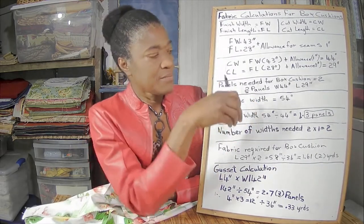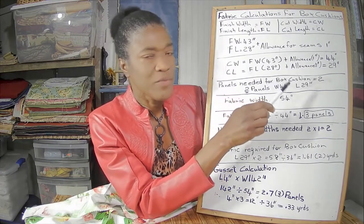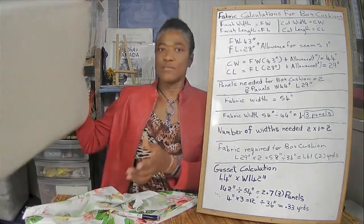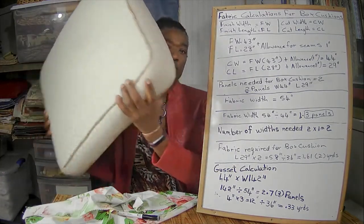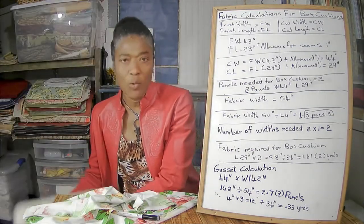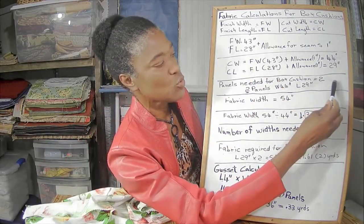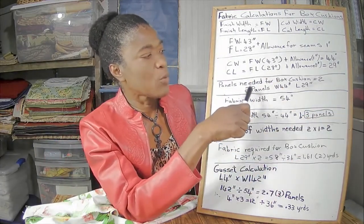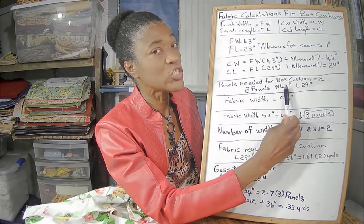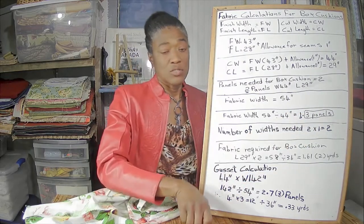Next, let's consider the panels we need for the box cushion. How many panels do we need? We need two panels — one for the front and one for the back. So we need two panels that are going to be 44 inches wide and 29 inches long.